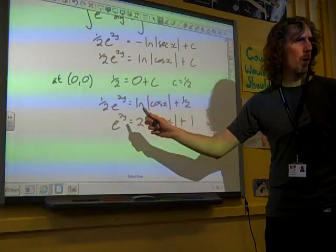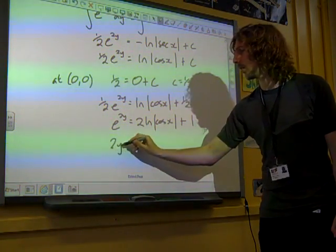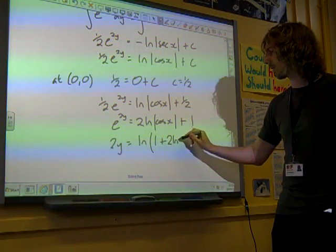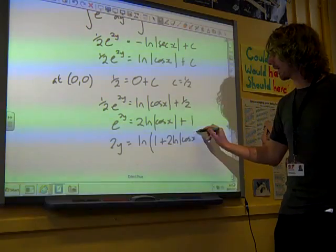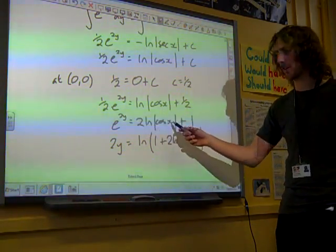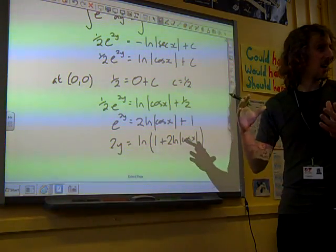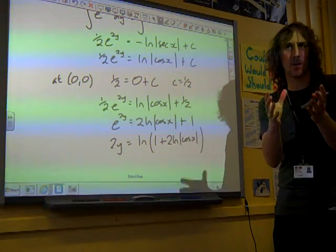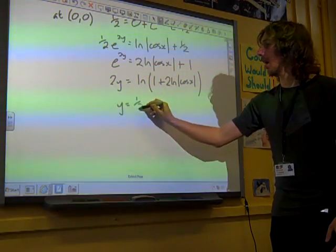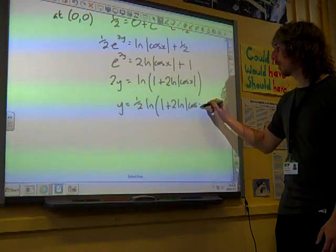Now, we need to get y on its own here. So let's take natural log of both sides. Just because it looks slightly nicer, I've written that in the opposite order. 1 plus 2ln cos x. So the natural log is 1 plus 2ln cos x. It feels really uncomfortable, doesn't it, to have a natural log inside a natural log function. But that's where we are. So y is a half ln 1 plus 2ln, the modulus of cos x.